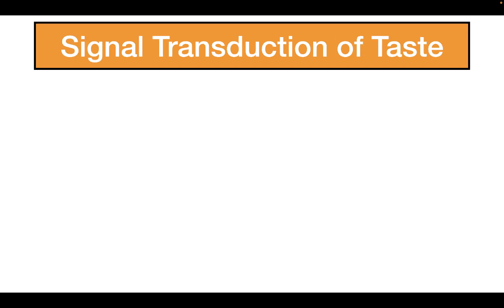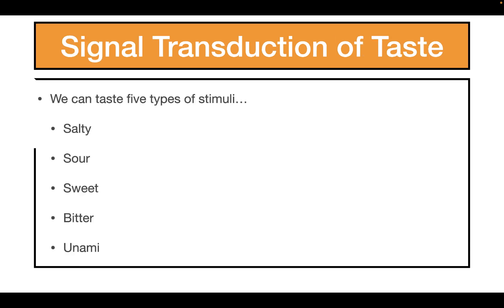Let's talk about how taste is transduced at the cellular level. We have five different things that we can taste: salty, sour, sweet, bitter, and umami. We're going to talk about the signal transduction pathways for each of these five stimuli.